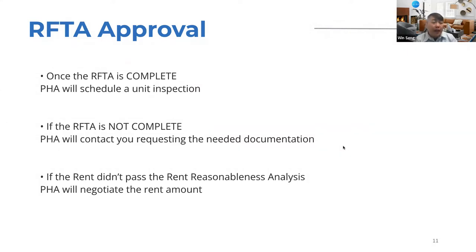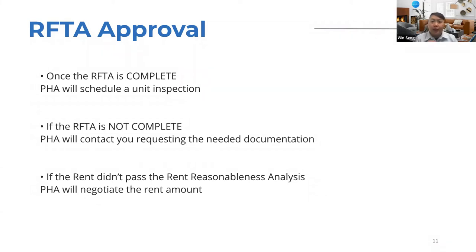If the unit doesn't pass rent reasonableness analysis, the PHA will negotiate the rent down. HUD requires that any unit's rent be reasonable and comparable to three other units in the same vicinity. This can be trickier for newer developments that don't yet appear on mapping services — in that case, the PHA may ask you to reduce rent by $50 or $100, but usually not much more.